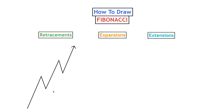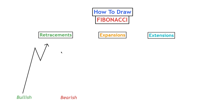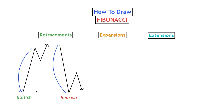Before we get our Fibonacci retracement tool we need to determine whether or not we have a bullish or bearish impulsive move. There's a little bit of subjectivity to it, but an impulsive move or impulsive wave is a quick and volatile movement that covers a lot of space in a short amount of time. In these two examples, this would be our bullish impulsive move and this would be our bearish impulsive move — these are the ones we'll be using the Fibonacci retracement tool on.